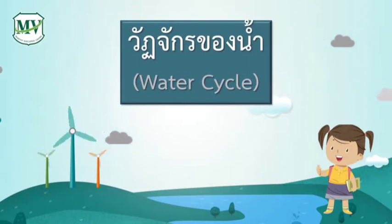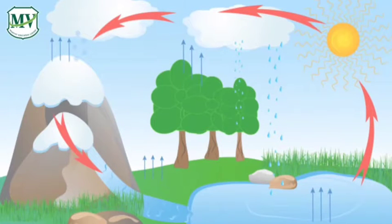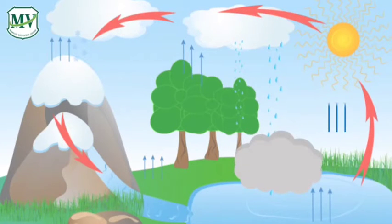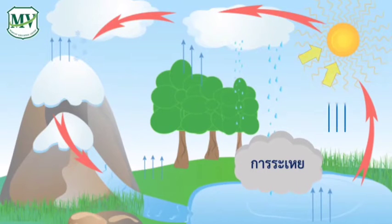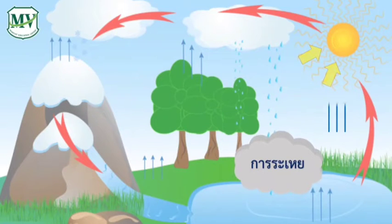อันดับแรก เรามาทำความรู้จักกับวัฏจักรของน้ำกันก่อนค่ะ การระเหยของน้ำต้องอาศัยความร้อน ทั้งจากธรรมชาติและมนุษย์สร้างขึ้น เช่น แสงอาทิตย์ หรือการต้มน้ำค่ะ เมื่อน้ำได้รับความร้อน ก็จะระเหยเป็นไอน้ำ ลอยขึ้นสู่ชั้นบรรยากาศ